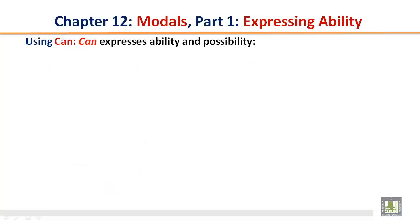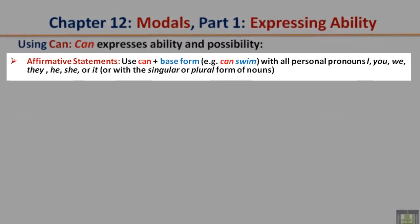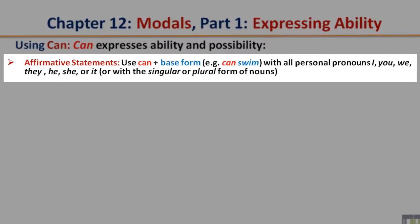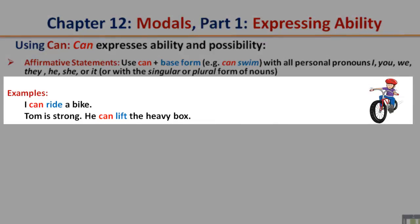Using can. Can expresses ability and possibility. Affirmative Statements: Use can plus the base form — for example, can swim — with all personal pronouns: I, you, we, they, he, she, or it, or with a singular or plural form of nouns. Examples: I can ride a bike. Tom is strong; he can lift the heavy box.